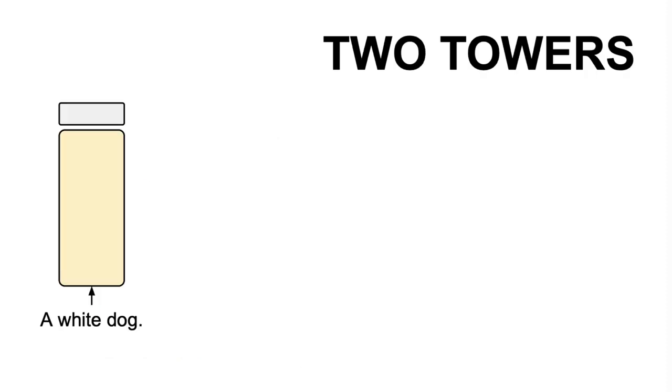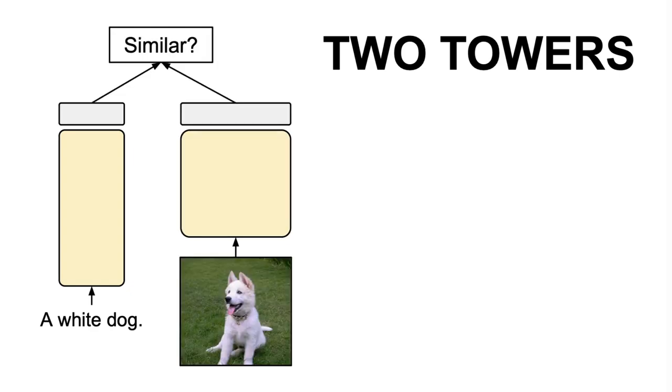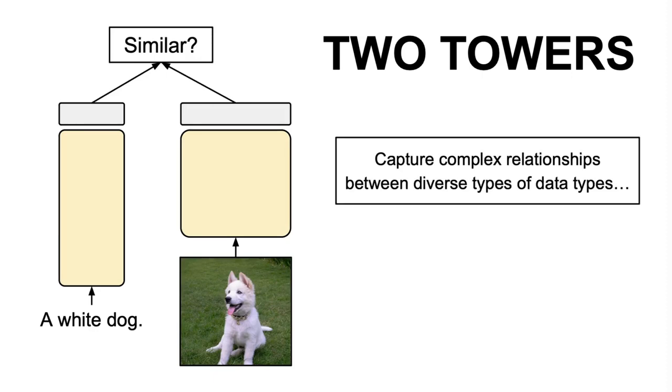For instance, in image retrieval applications, it is necessary to combine visual and textual information seamlessly. The two towers architecture accomplishes this by creating separate towers, each handling one modality and then merging the embeddings at a later stage.